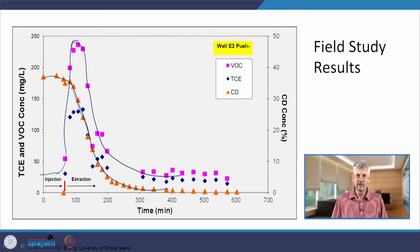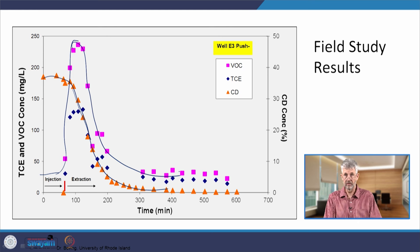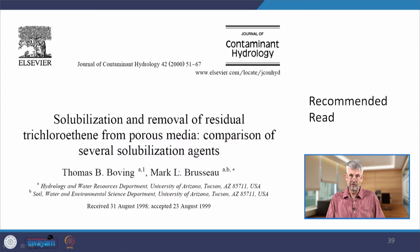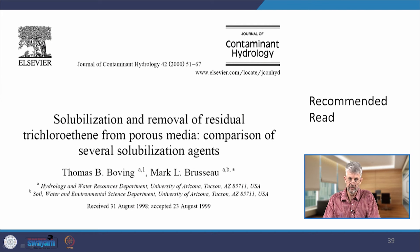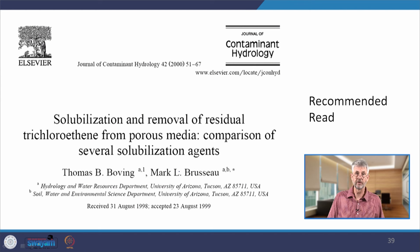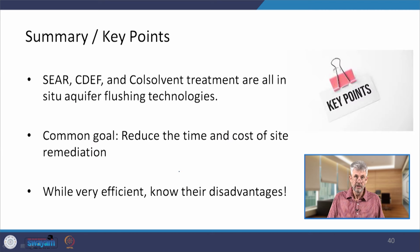The trick is to continue this process until the source zone concentration has been depleted to the point that additional injections of cyclodextrin no longer make sense. At that point, the source zone can be considered removed, and whatever remains in the ground has to be addressed by other remediation measures. For further comparison of the effectiveness of cyclodextrin versus co-solvents versus surfactants, I refer you to a paper from my Ph.D. thesis published in the Journal of Contaminant Hydrology.